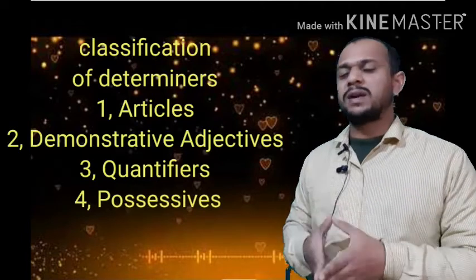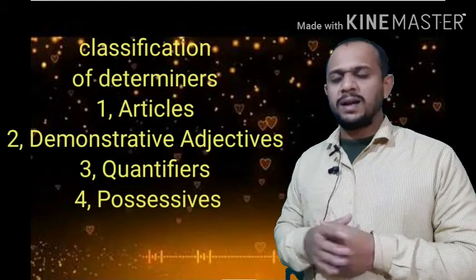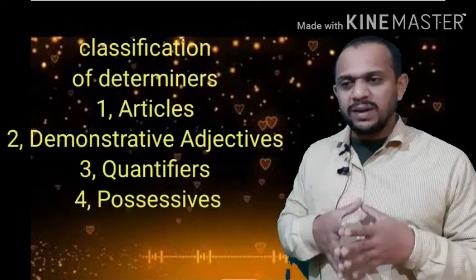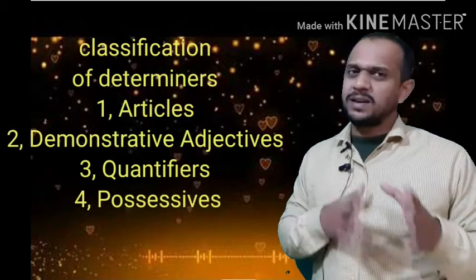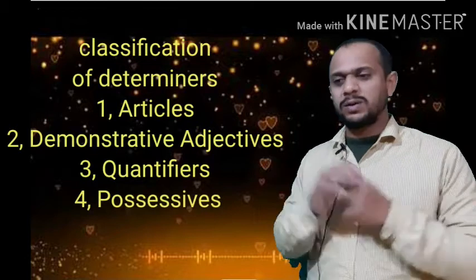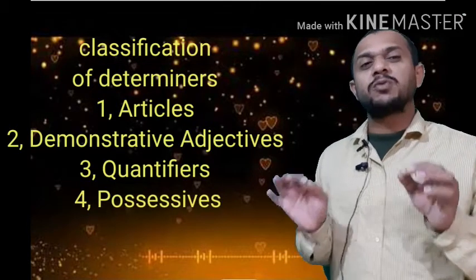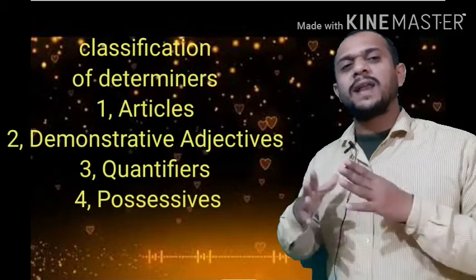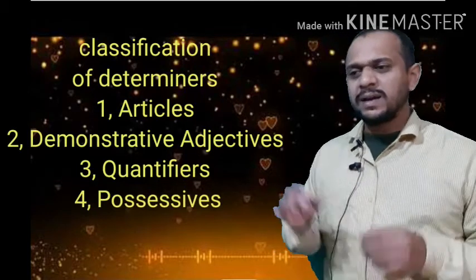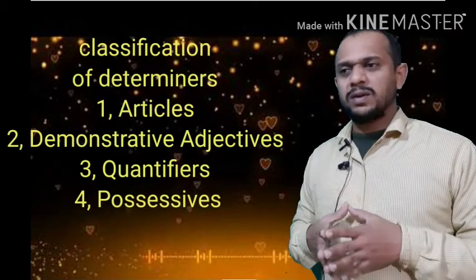In distributive quantity we have: each, every, all, either, neither. Then comparative quantity includes: more, less, fewer. And lastly, possessive quantity.